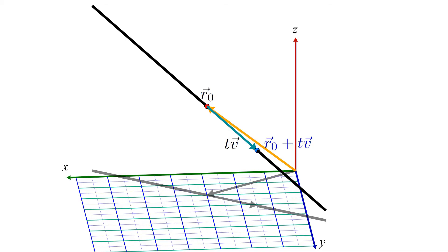If we represent any such point on the line with a vector we'll call r with no subscript, we arrive at the vector equation of a line: r equals r0 plus tv.